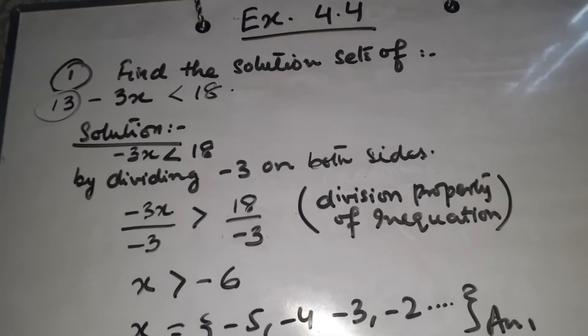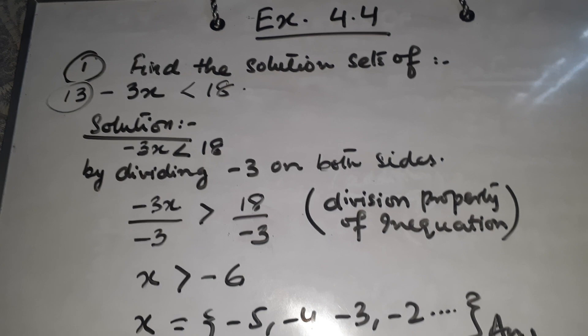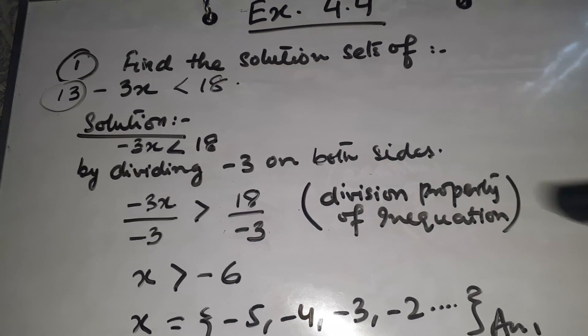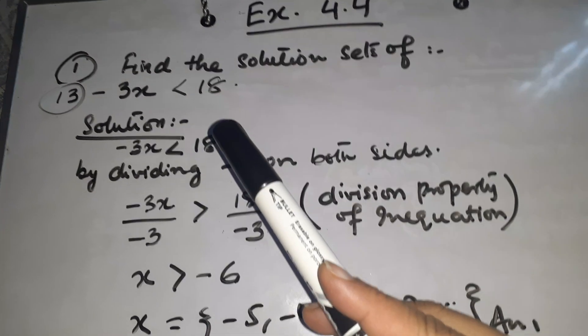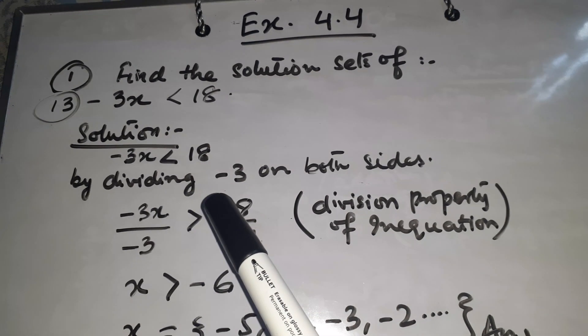I have told you: if a negative number is divided on both sides, then the order of an inequality will change. So minus 3x is less than 18. So minus 3x is less than 18. So what are we going to do?